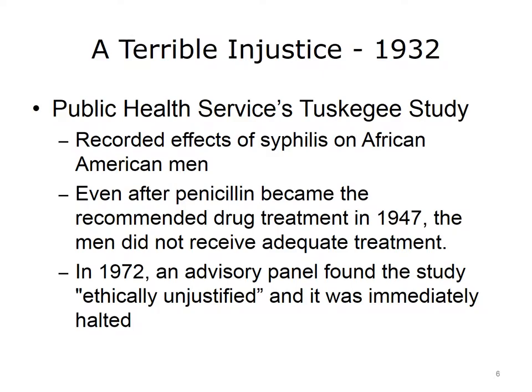The first of these is the infamous Tuskegee study, which began in 1932 and concluded in 1972. What started as an experiment to study the effects of syphilis on African American men became unethical when a new treatment, penicillin, was deliberately withheld from subjects after it became the recommended treatment in 1947.